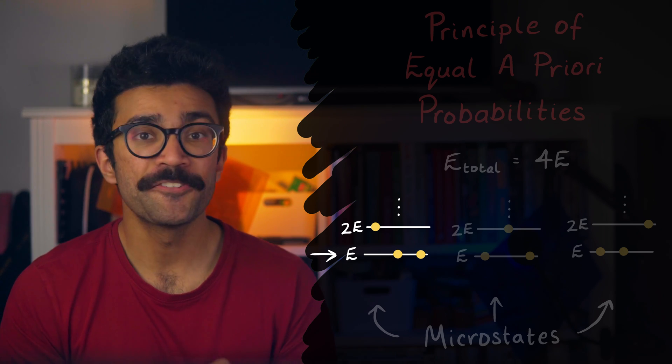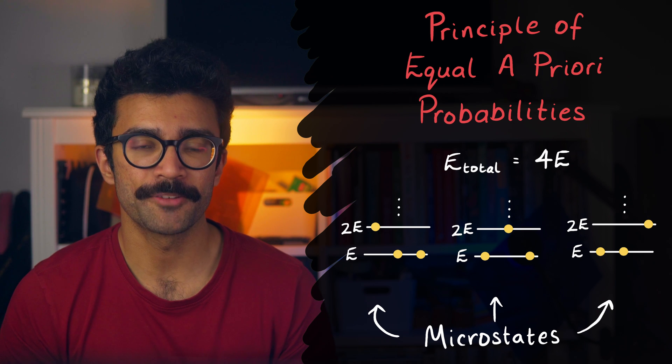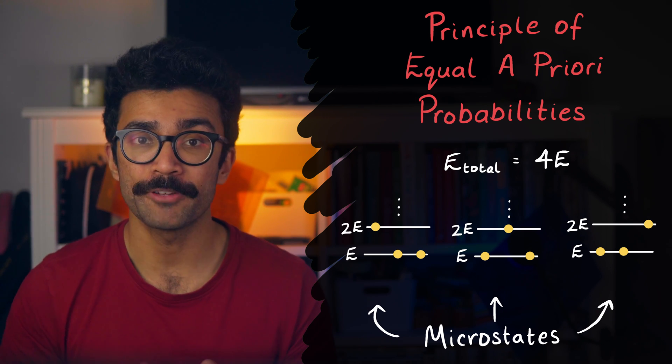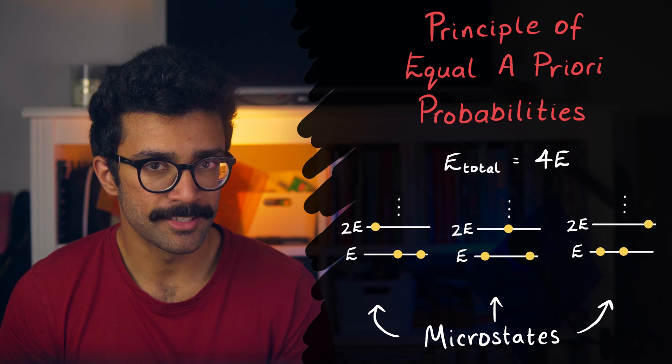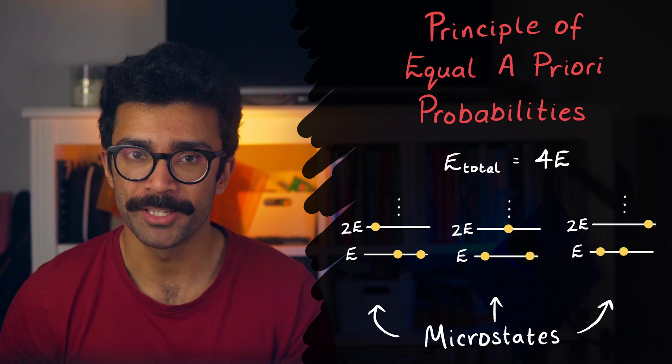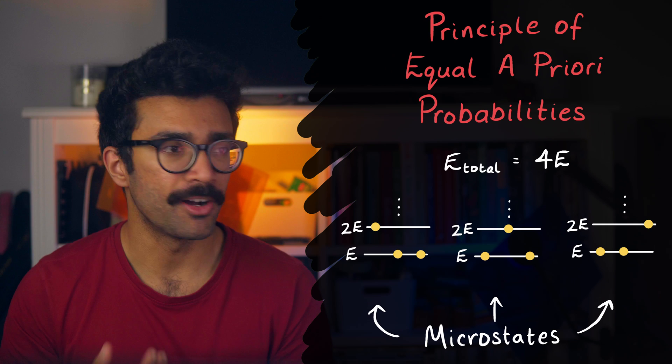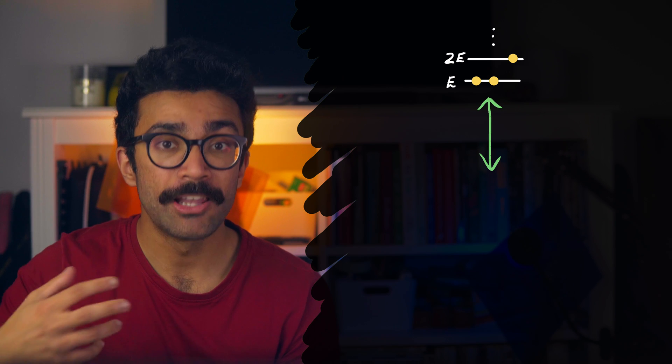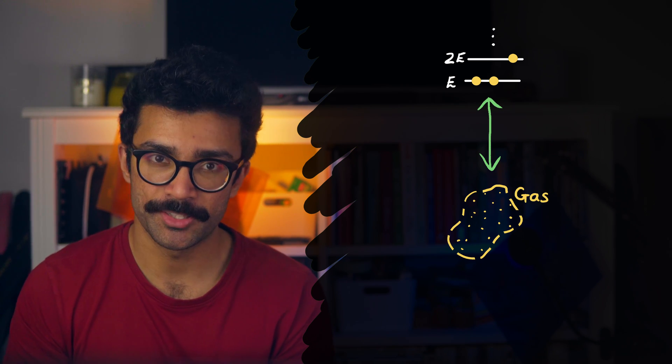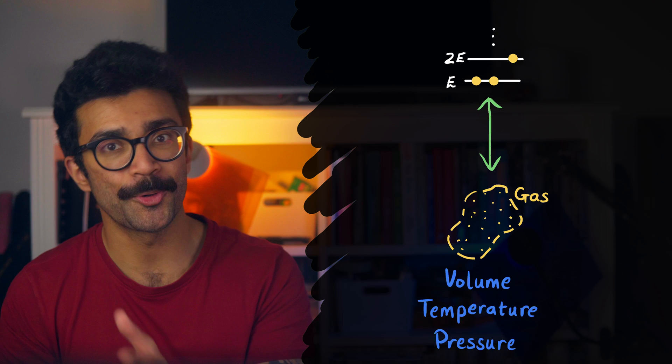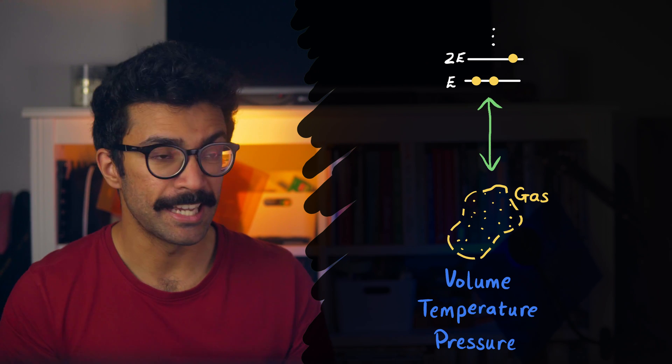Anyway, so we've seen the first assumption used to build up the theory of statistical mechanics, the principle of equal a priori probabilities. The second assumption is a little bit more interesting, in my opinion, because it links properties of our small-scale view of the system, where we deal with energies of individual particles, with large-scale properties of the whole system, such as the volume, or the temperature, or the pressure of the, in this case, gas.